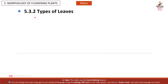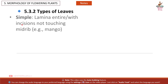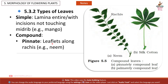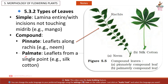5.3.2 Types of leaves: Simple — lamina is entire, with incisions not touching the mid-rib, e.g. mango. Compound — Pinnate: leaflets along rachis, e.g. neem. Palmate: leaflets from a single point, e.g. silk cotton.